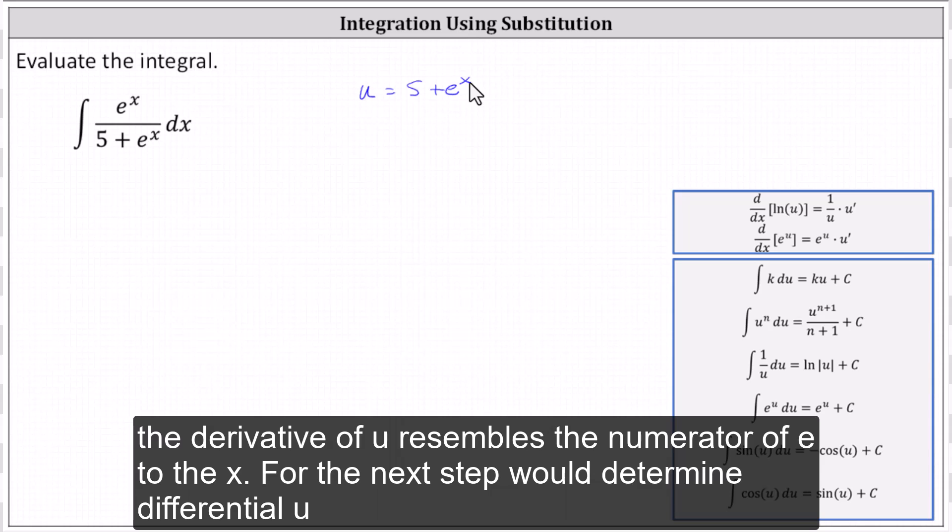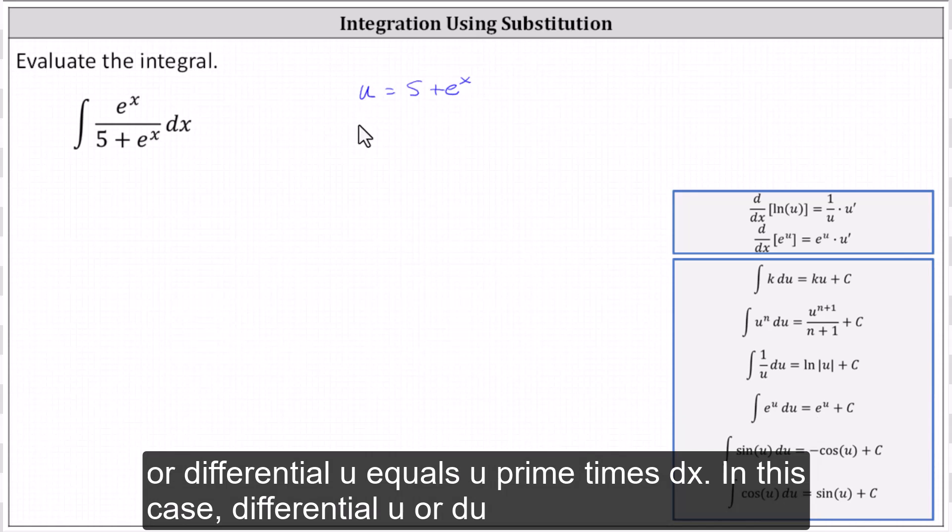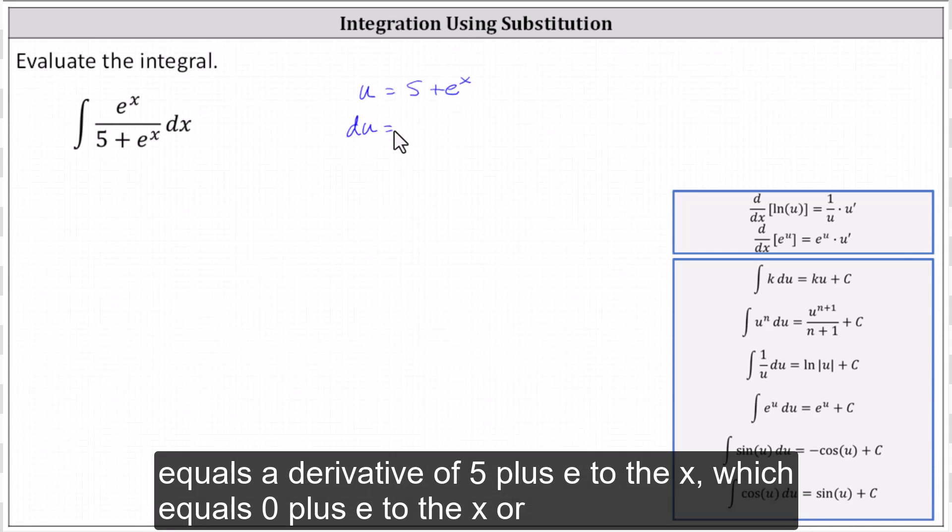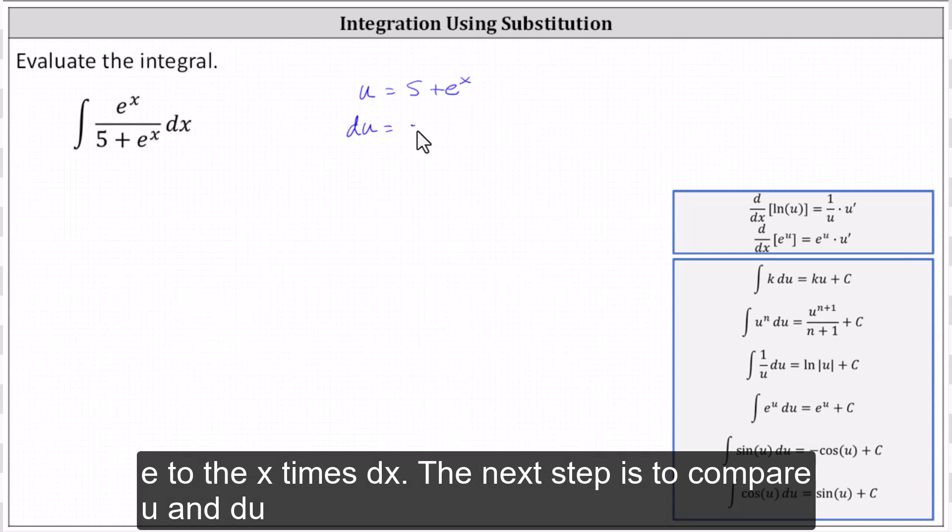So the next step would determine differential u, where differential u equals u prime times dx. In this case, differential u or du equals the derivative of 5 plus e to the x, which equals zero plus e to the x, or e to the x times dx.